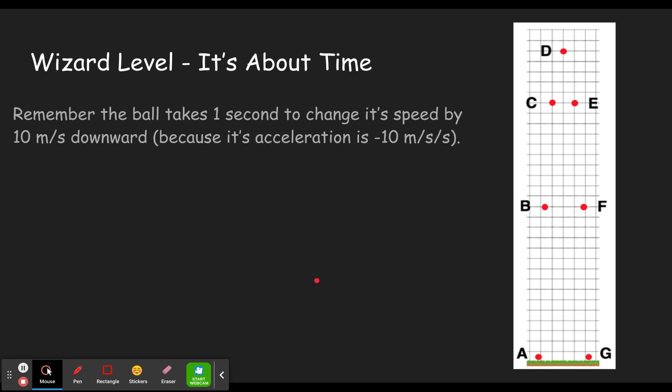Okay, so the wizard level, it's all about time or it's about time. It's about time. Remember the ball takes one second to change its speed by 10 meters per second downward because of the acceleration. So if we look through this and this is 30 and this is 20, and this is 10 at 0, 10, 20, 30.